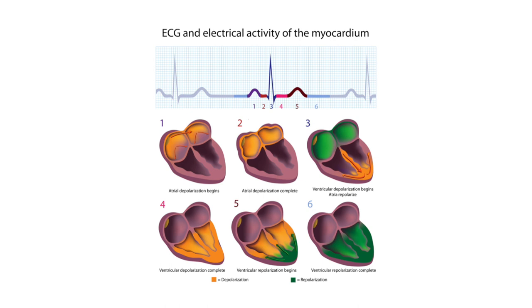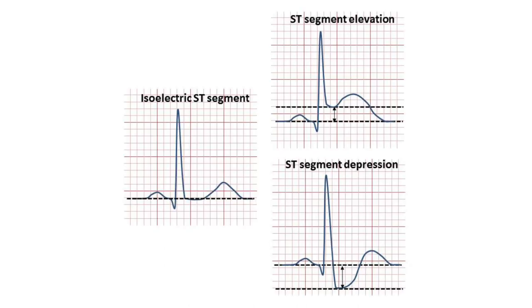Item three is your QRS, when ventricular depolarization begins and the atrias repolarize. Item four is your ST segment, representing completion of ventricular depolarization. The ST segment could be isoelectric, which is a flat line. If there is ST elevation or ST depression, that could be an indication of an MI or a cardiac ischemic event. As a side note, the J-point — not commonly mentioned — begins at the end of the QRS and the beginning of the ST segment.